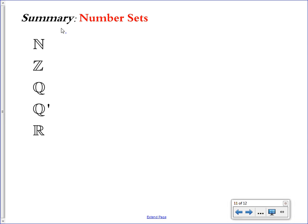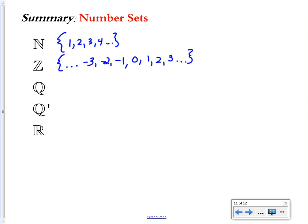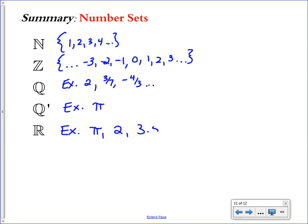In summary: N stands for natural numbers — written as 1, 2, 3, 4, ... — the counting numbers, and it does not include 0. Z is the set of integers, including all negative and positive whole numbers and 0. Q is the set of rational numbers — anything you can write as a fraction, such as 2 (written as 2 over 1), 3 over 7, negative 4 thirds, or even 0.5 (written as 1 over 2). Q prime is the set of irrational numbers — things you cannot write as a fraction, like pi. R is the set of real numbers — pretty much everything you know of, including positives, negatives, fractions, decimals, and whole numbers — just not imaginary numbers.